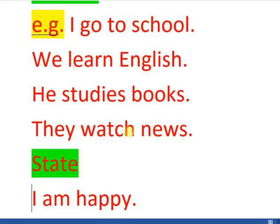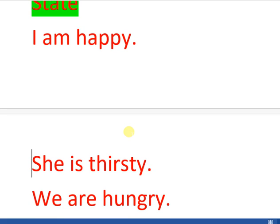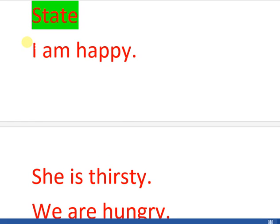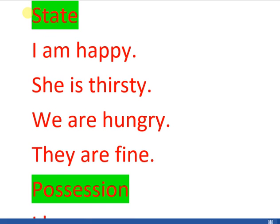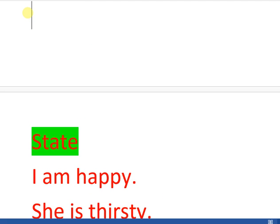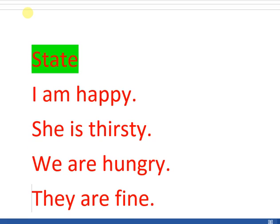The second function is state — a verb is a word which describes state. This means that in every sentence the action is not always present; sometimes there will be a state. For example, 'I am happy' — here 'am' is a verb because it describes the state of the subject, showing in which state the subject is.